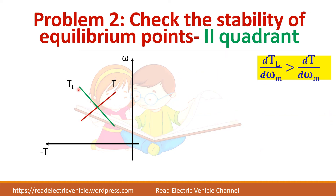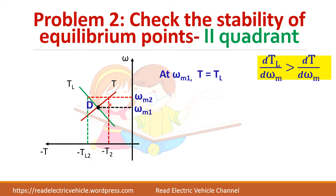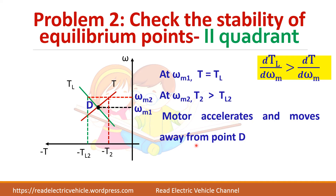In the same second quadrant, consider another operating point D where T equals TL with different characteristics. Increasing the speed shows that motor torque T2 is greater than load torque TL2. Since motor torque exceeds load torque, the motor accelerates, moving away from point D. Therefore, point D is an unstable point.